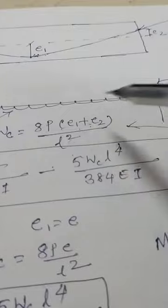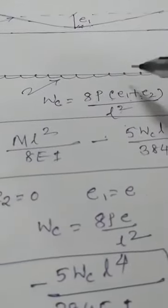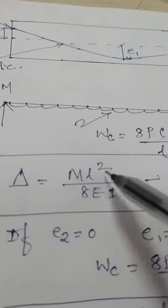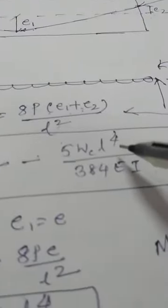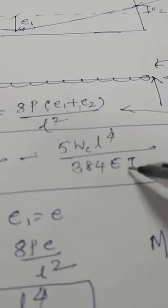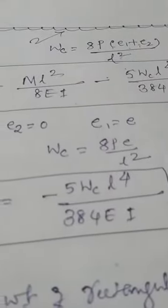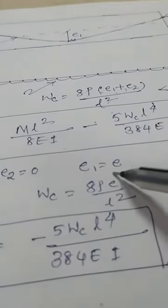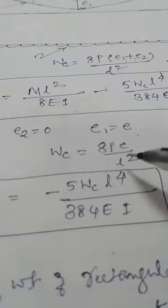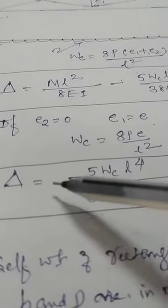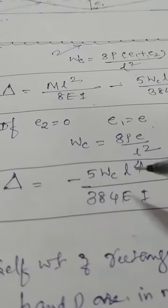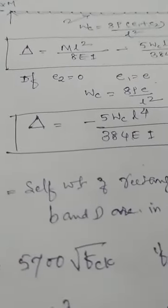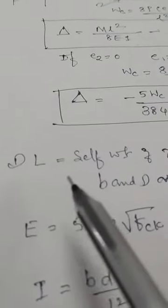Two forces are responsible for deflection: the moment and the equivalent UDL. One creates a downward deflection and the other an upward deflection. The formula is ML²/8EI minus 5WL⁴/(384EI). If e2 is zero, the moment vanishes, only e1 exists taken as e, and Wc is simply 8Pe/L². With no moment, the only deflection is due to the upward UDL: 5WL⁴/(384EI).